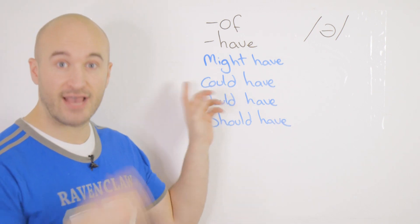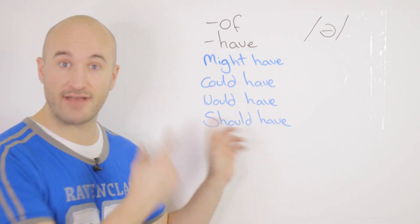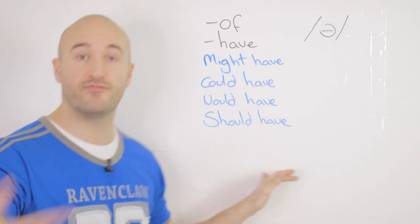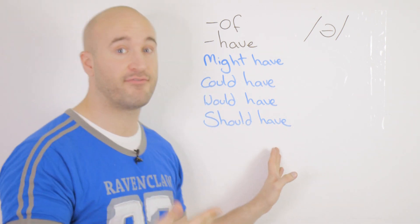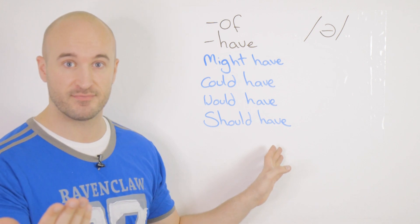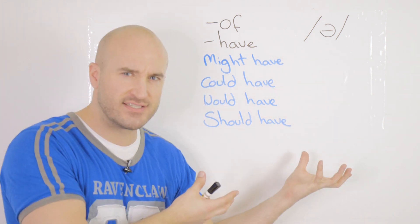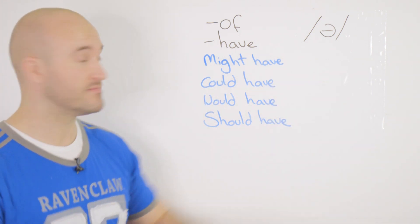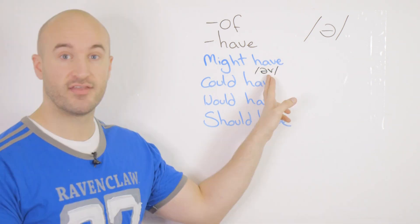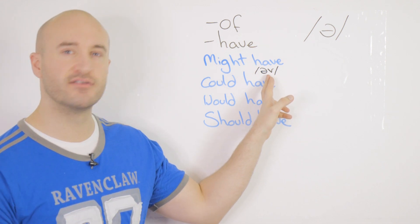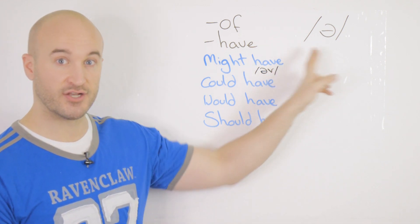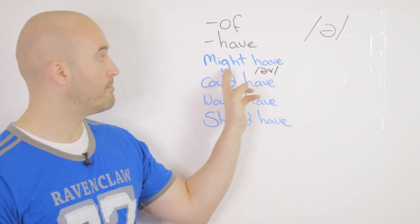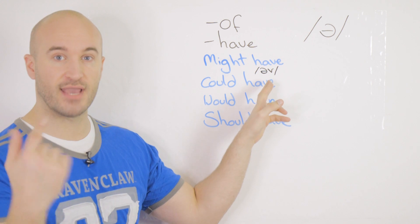Might have, could have, would have, should have — all the modal verbs with 'have' afterwards. For language geeks, the 'have' reduces to 'of' — a schwa with V. Say it with me: might have.